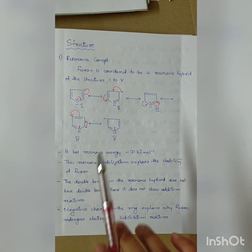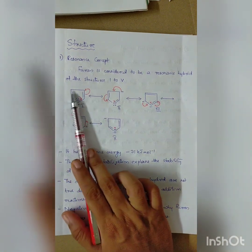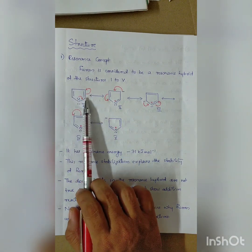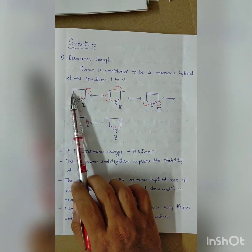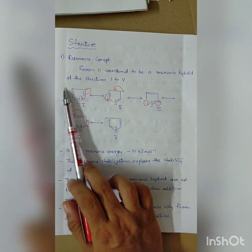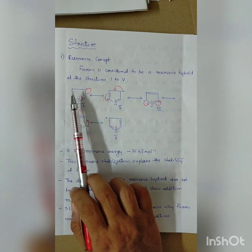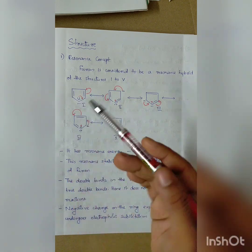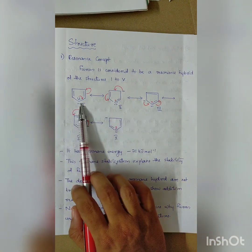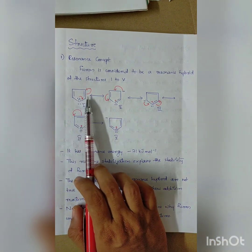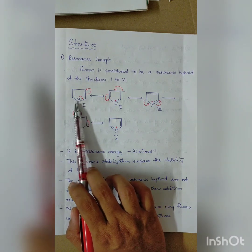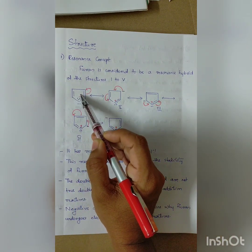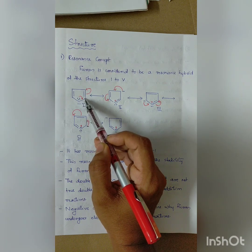In the resonance structures, there is an acceptable structure where the oxygen has a lone pair. In this 5-membered cyclic structure, resonance involves the shifting of double bonds and electron pairs between carbon and oxygen atoms, forming a series of resonance contributors.